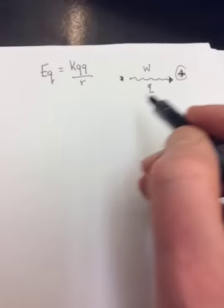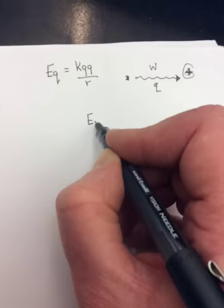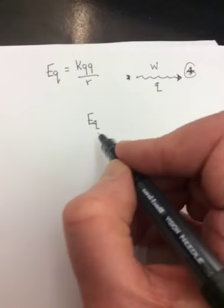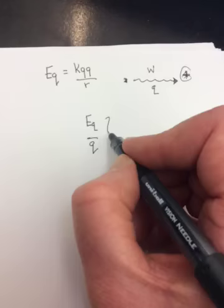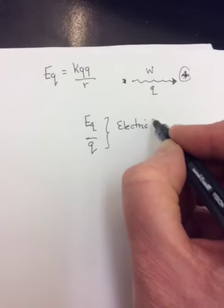And then I said, well, what if we wanted to say how much work was done regardless of the charge being brought in? So what if we took this energy, which is like the work done, and we divide it by the Q, the charge being brought into the field? What this is going to give us is called the electric potential energy difference.